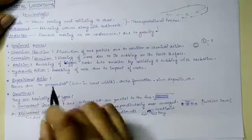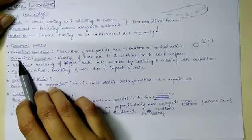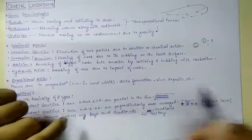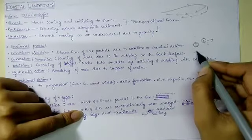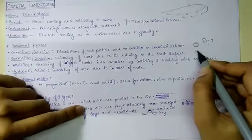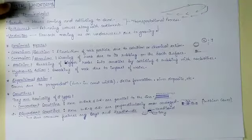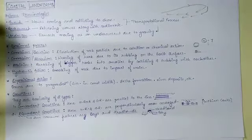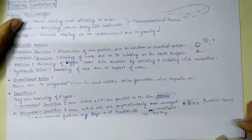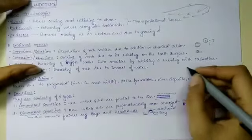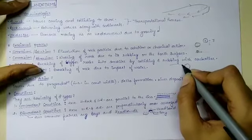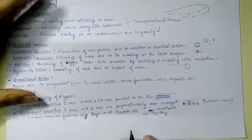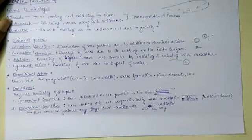Next is abrasion, also known as corrasion — this is the wearing of rock due to its rubbing on the earth's surface; when a rock rubs on the earth's surface and wears away, this is abrasion. Next is attrition — the breaking of bigger rocks into smaller ones by colliding or rubbing with each other. Next is hydraulic action — the breaking of rock due to the impact of water; when a huge amount of water suddenly hits a rock, it breaks into pieces.